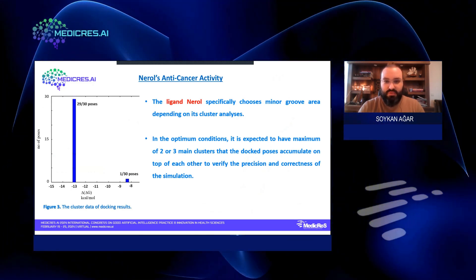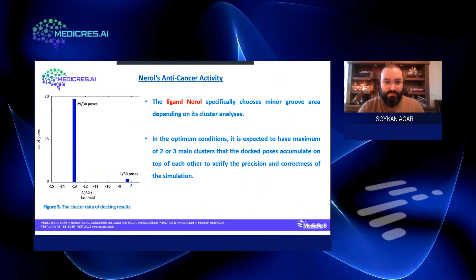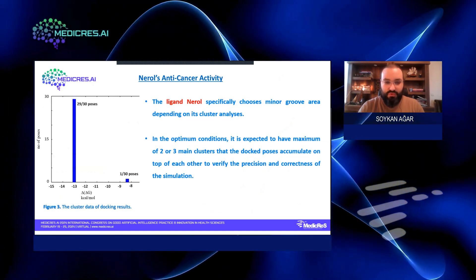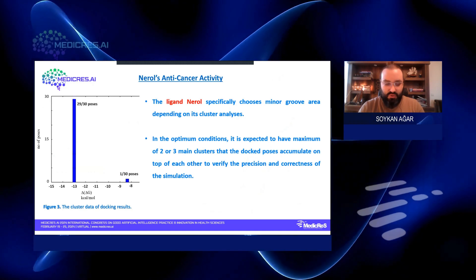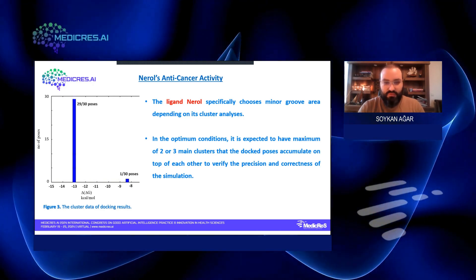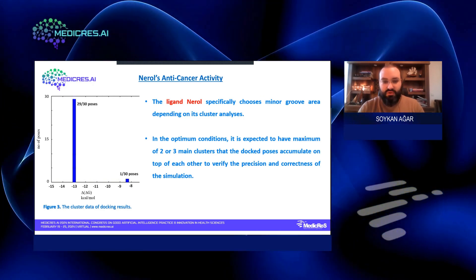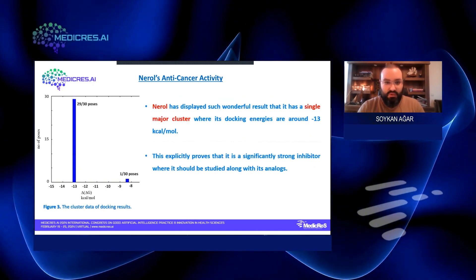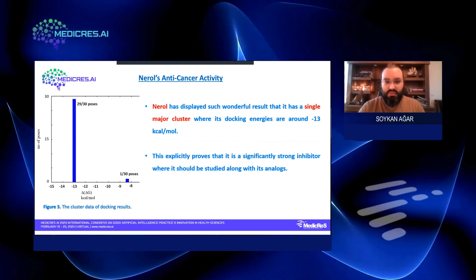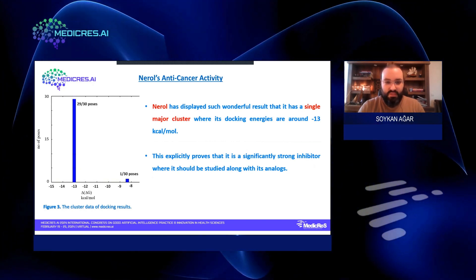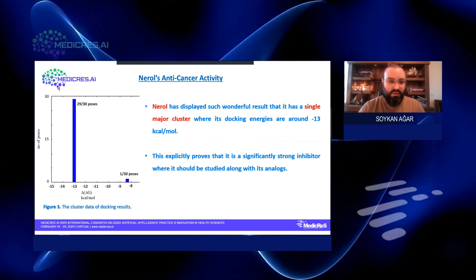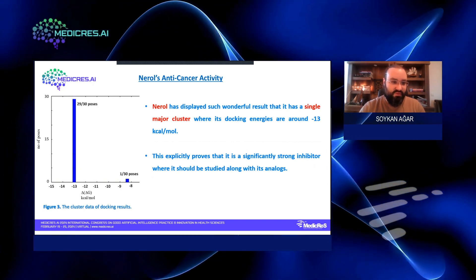The ligand Nerol specifically chooses the minor groove area of the DNA based on its cluster analysis. In optimum conditions, it is expected to have a maximum of two or three main clusters, as known from the scientific literature, and these docking poses accumulate on top of each other to verify the precision, accuracy, and correctness of the simulation. Nerol displayed such a tremendous result that it has a single major cluster where its docking energy was quite great, explicitly proving it is a significantly strong inhibitor that should be studied further along with its other chemical functional group derivatives.